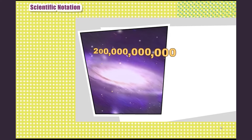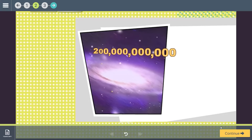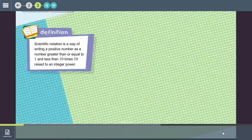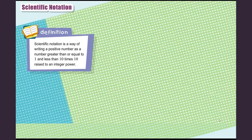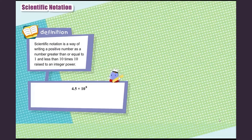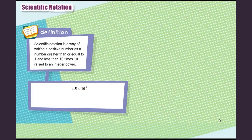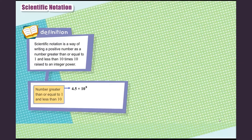Scientists came up with a more efficient way to write very large numbers — it's called scientific notation, and it's the topic of this lesson. Within the instructional portions, students are given clear definitions and explanations for the academic language they need to know. For example, 4 and 5 tenths times 10 to the 8th power is a number written in scientific notation: 4 and 5 tenths is greater than or equal to 1 and less than 10, and the base 10 is raised to the 8th power.